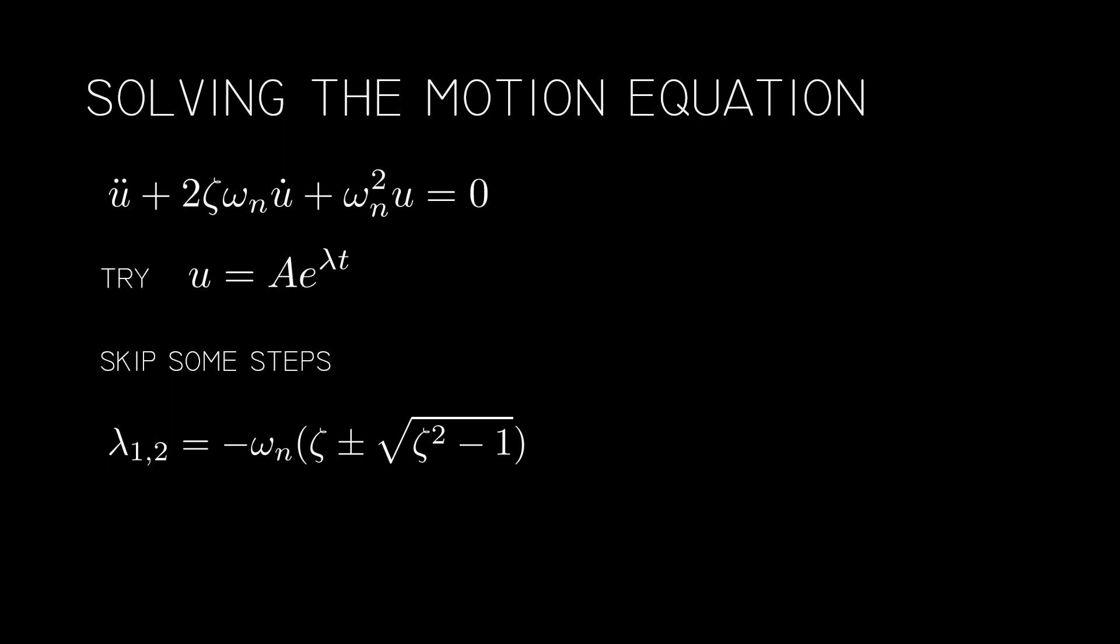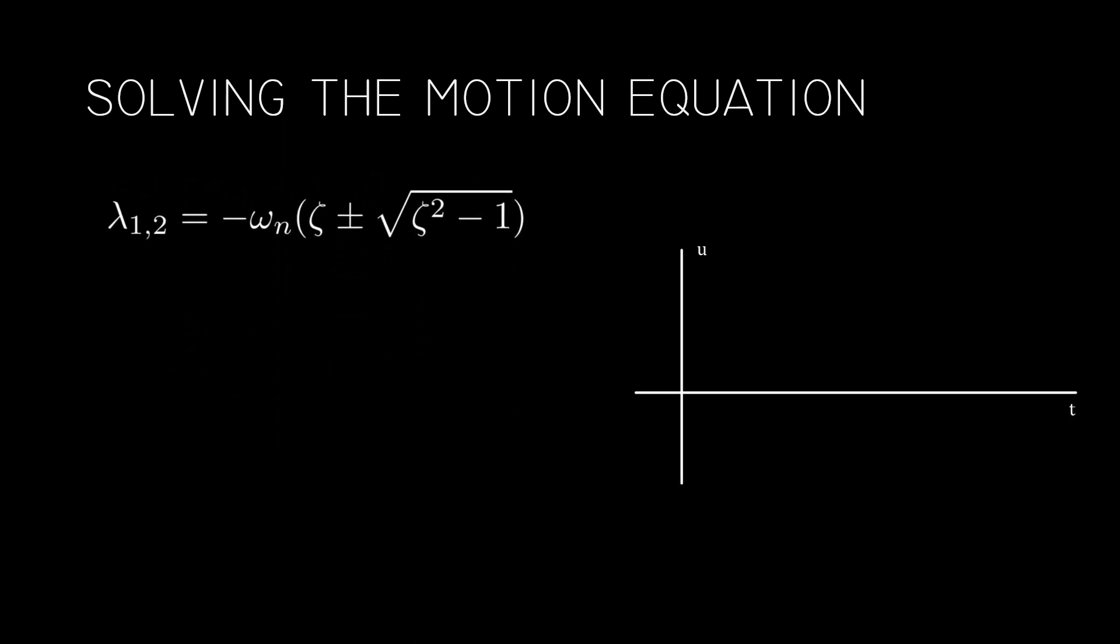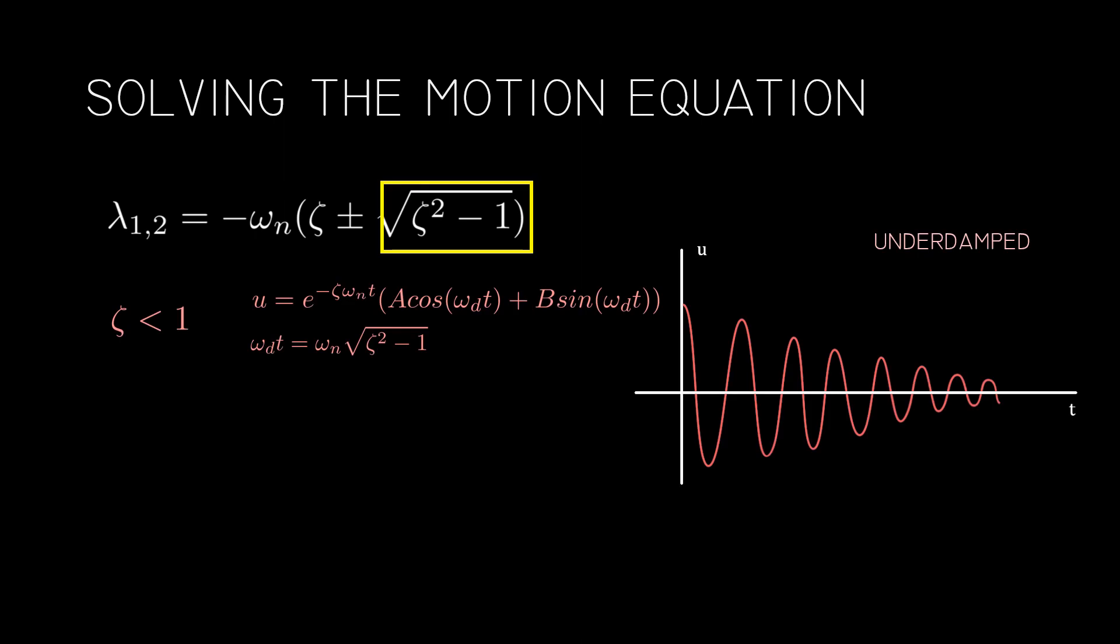This further splits into three categories, depending on the value of this, namely zeta less than 1, the underdamped case, zeta is equal to 1, critically damped, where the system reaches equilibrium the soonest, and zeta greater than 1, the overdamped case. The equations shown here can be used to find the position of the mass at any time t, after we substitute the initial conditions of course. Don't forget to substitute your initial conditions.